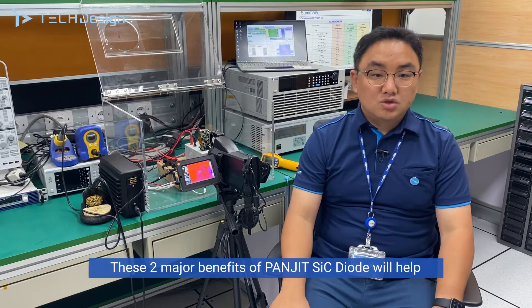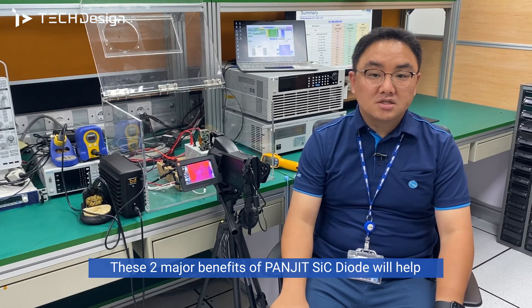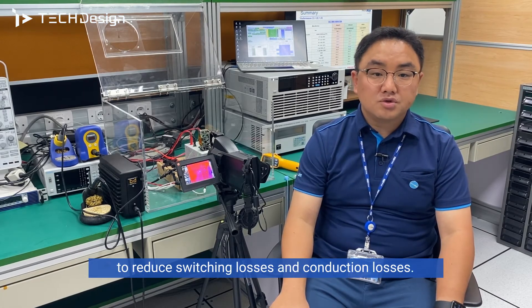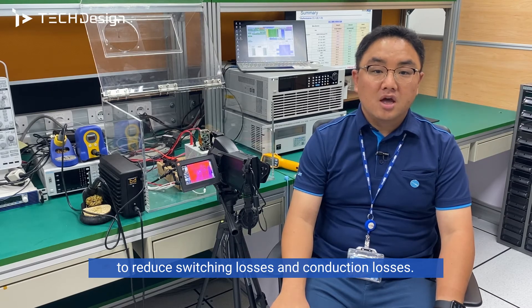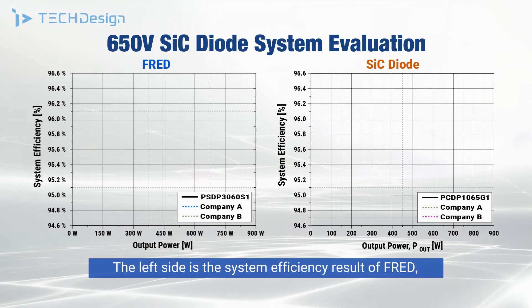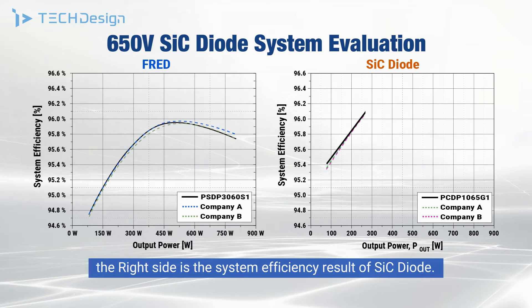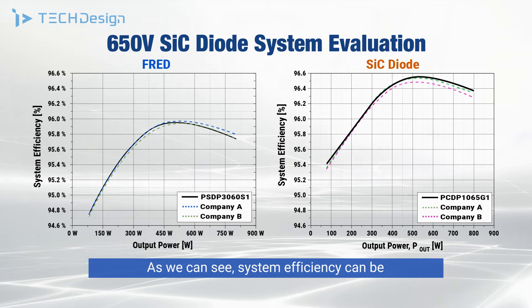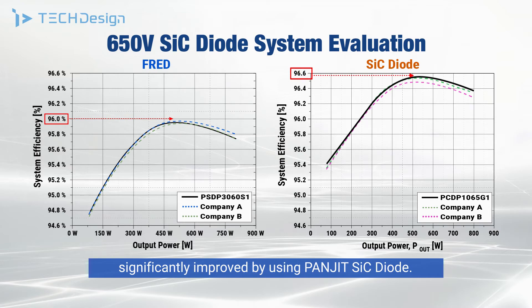These two major benefits of Panjit SiC Diode will help to reduce switching losses and conduction losses. The left side shows the system efficiency result of FRD, and the right side shows the system efficiency result of SiC Diode. As we can see, system efficiency can be significantly improved by using Panjit SiC Diode.